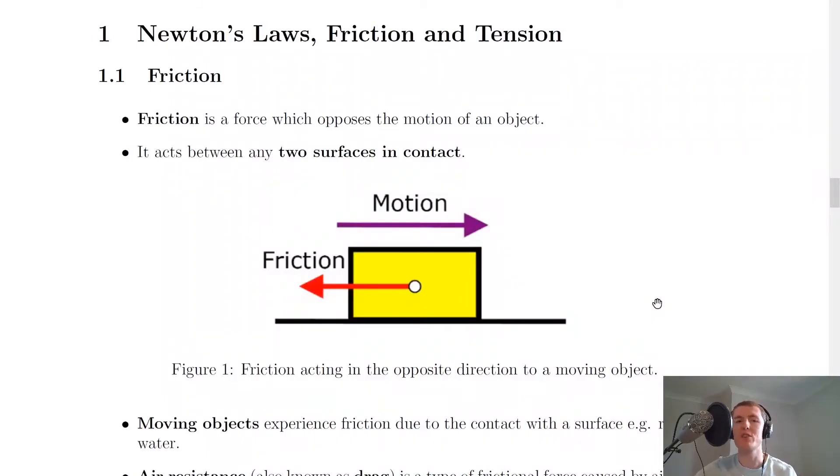Now the first thing to look at is the definition of friction, and it says that friction is a force which opposes the motion of an object. It acts between any two surfaces in contact.